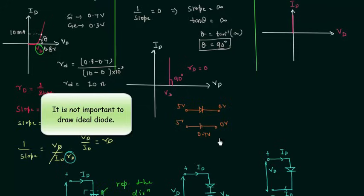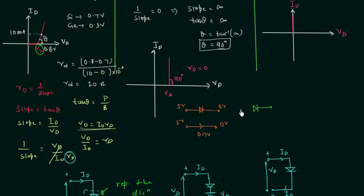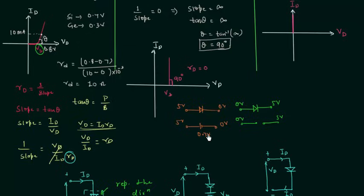If it is given that the diode is a silicon diode, the barrier potential equals 0.7 V, and now you can easily solve the circuit. If the diode is reverse biased — P side connected to low potential and N side to high potential — there will be no current through the diode, so it acts as an open circuit. In forward bias, replace the diode by its barrier potential; in reverse bias, it acts as an open circuit. These two points are very important for solving numerical problems.